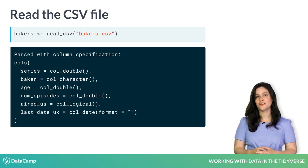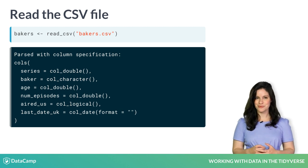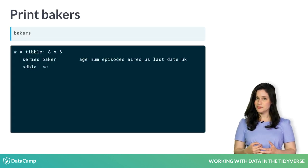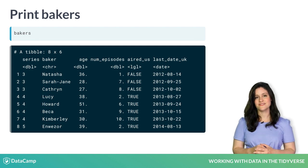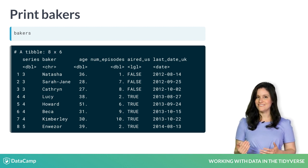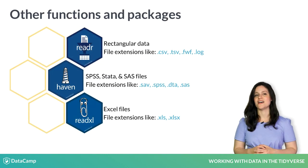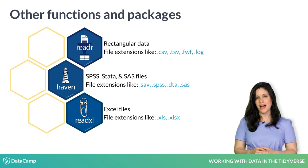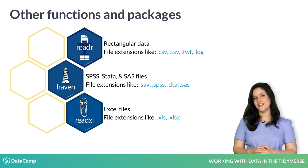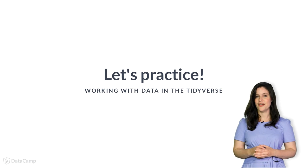But for now, readR was able to parse each column, which means we are ready to proceed. Let's look at the bakers data. Typing bakers prints the tibble to our console. We see ten observations of six columns or variables. The column names, variable types, and values look right here. In the exercises, you'll see some examples of when these look wrong. The readR package has other functions to read in different rectangular file formats. There are also tidyverse packages, like Haven and readxl, for reading in other file types. Now, let's practice reading in a new CSV file of the bake-off data.